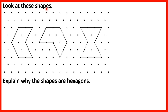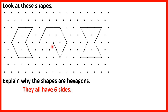Look at these shapes. Explain why the shapes are hexagons. A hexagon is a shape with 6 sides. So these shapes are all hexagons because they all have 6 sides.